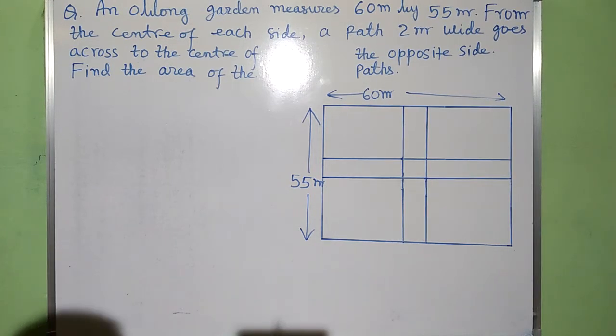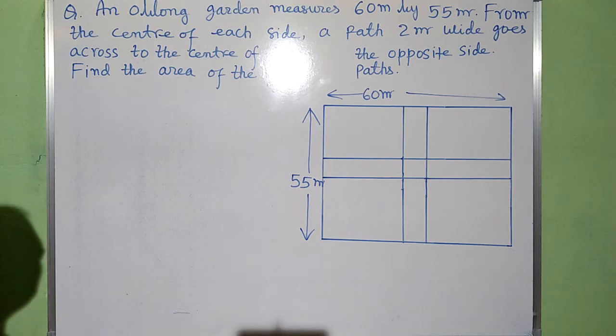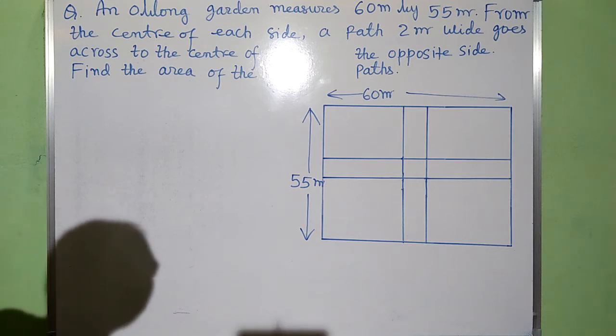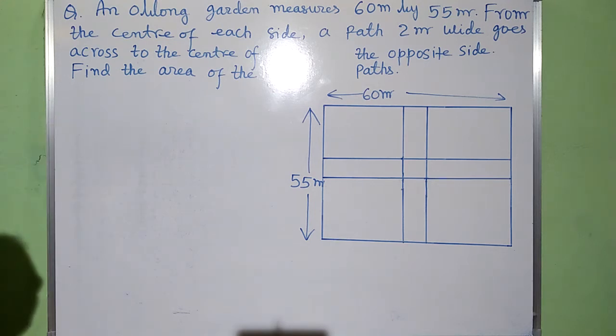Namaste everyone, here I am going to solve one question which runs like this: An oblong garden measures 60 meter by 55 meter. From the center of each side, a path 2 meter wide goes across to the center of the opposite side. Find the area of the paths.